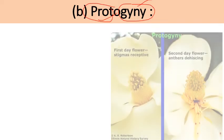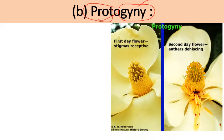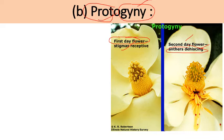Next is protogyny — 'proto' means early, 'gyny' means female part — here the female part matures earlier compared to the male part. On the first day the stigma becomes receptive and on the second day the anthers dehisce their pollen grains. Since the stigmatic surface is receptive before the anthers release pollen, there is no simultaneous activity of male and female reproductive organs — this is again an adaptation ensuring cross pollination.